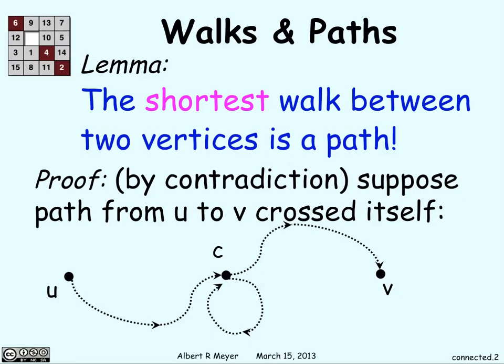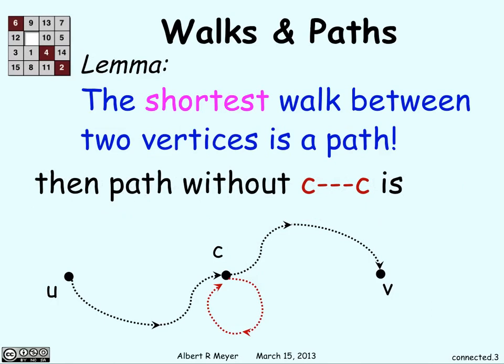But if you want to get the shortest path from u to v, why would you go through this loop? Why not just keep going straight from c to v? The path without that section that goes from c back to itself also goes from u to v, and is shorter. So, if we have any path that crosses over itself, we can just get rid of that part that loops around back into itself, and we still have a walk from u to v. Therefore, the shortest walk from u to v is going to be a path.